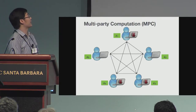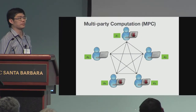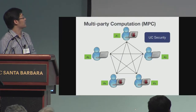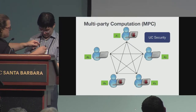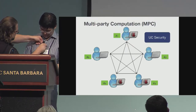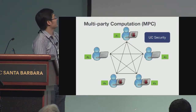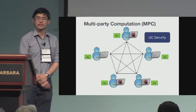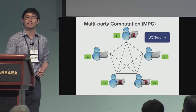In this work we consider a malicious adversary, where the adversary can make the corrupted party deviate from the protocol. We also consider UC security, which is a very strong notion of security. Unfortunately, UC security cannot be achieved for some functionality in the plain model.